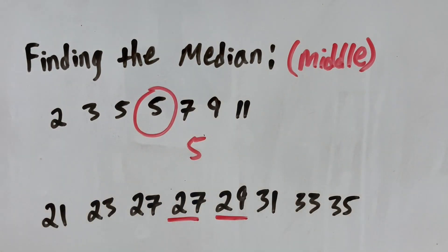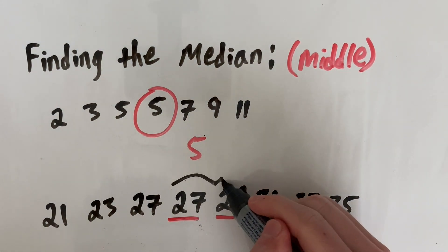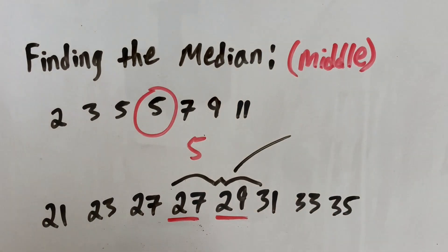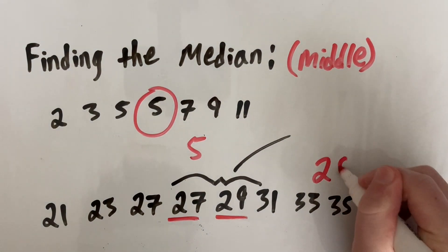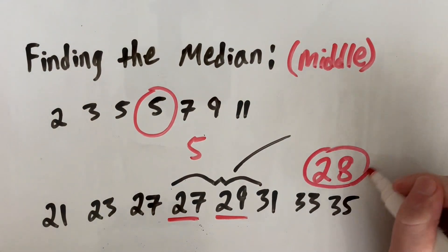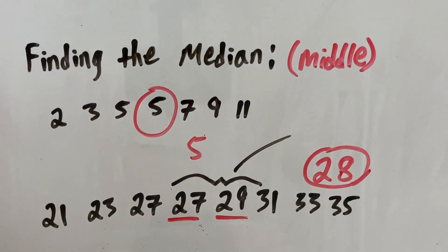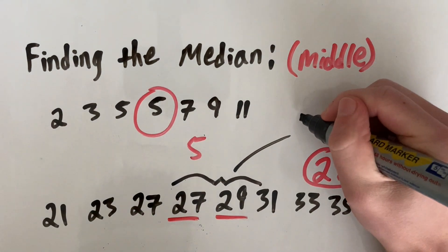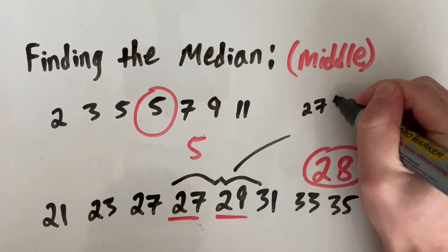So just by looking at this, we can see the median will be the middle of those two, which is 28. And if you can't look at it and just know what's in between those two numbers, it's not always going to be as simple as between 27 and 29. Sometimes the gap is larger.